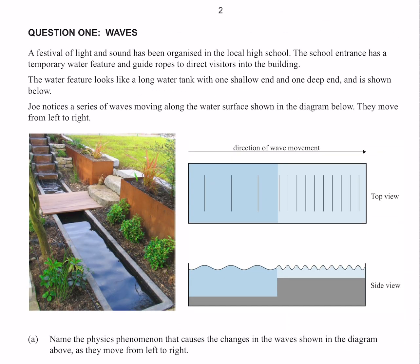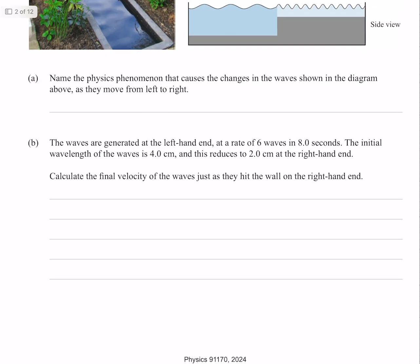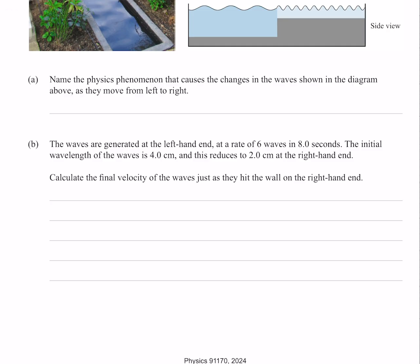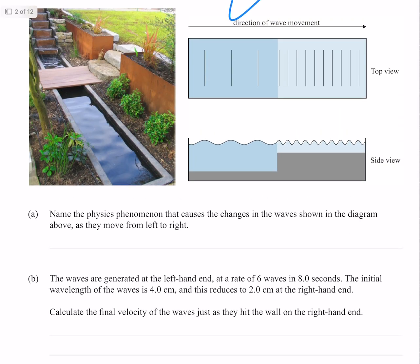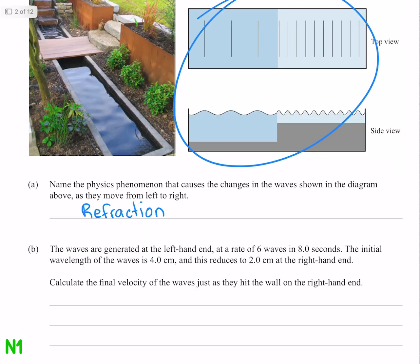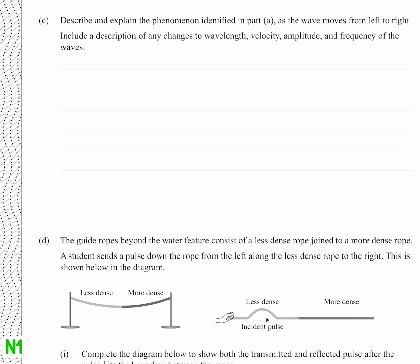Let's not waste time reading all of this. Name the physics phenomena that causes the change in the waves shown in the diagram above as they move from left to right. This is refraction. Describe and explain the phenomenon identified in part A. Since we're moving into shallower water, the wave slows and the wave gets higher.